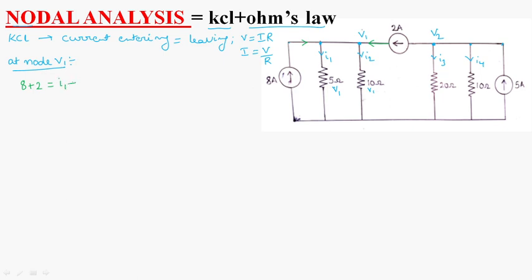8 plus 2 is equal to currents leaving the node. What are the leaving currents? I1 and I2 are the currents leaving. So, 8 plus 2 is equal to 10 and at this point, for I1, we are applying Ohm's law. I is equal to V by R. Here, I1. For I1 is equal to V1 by 5 ohms. V1 by 5 ohms plus I2 is equal to V1 by 10 ohms.